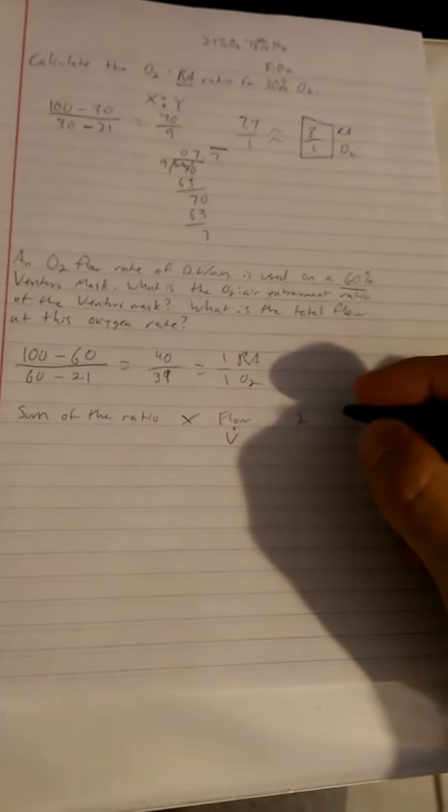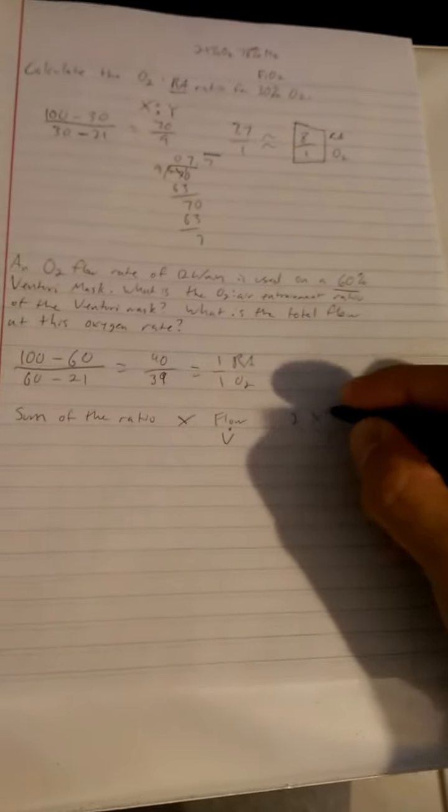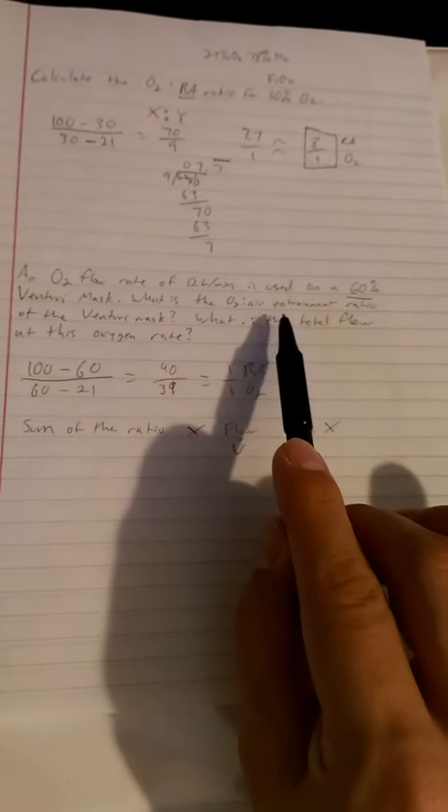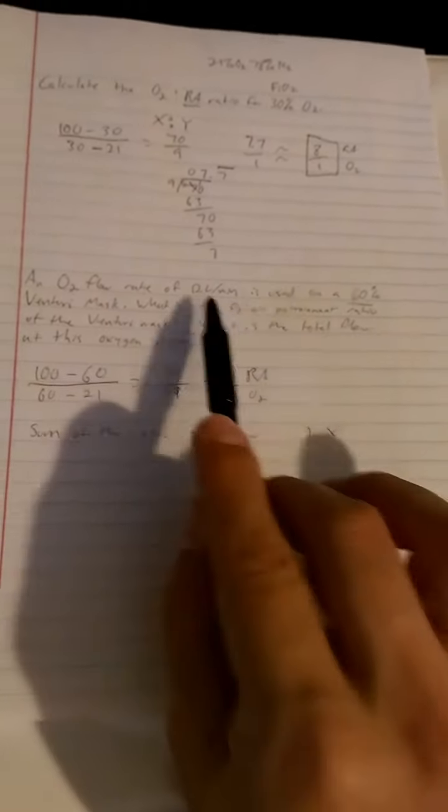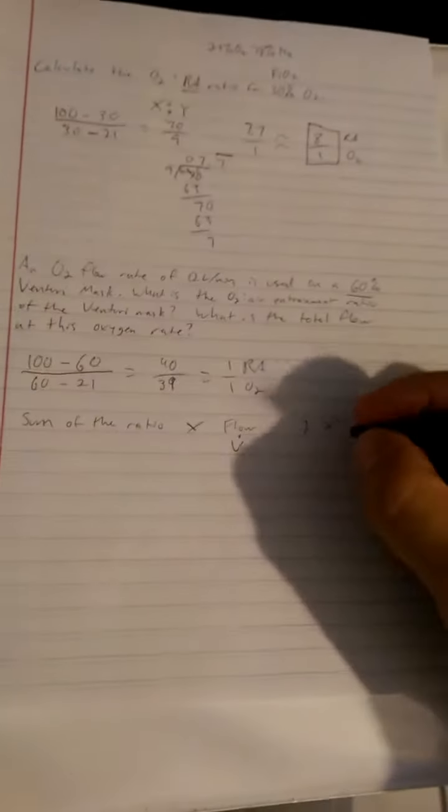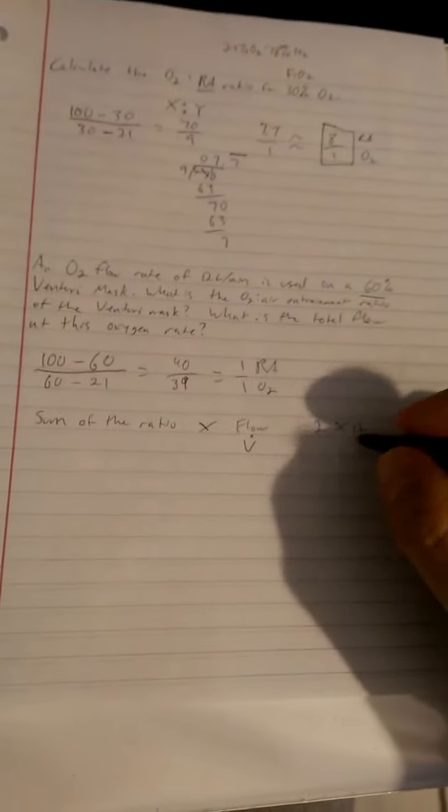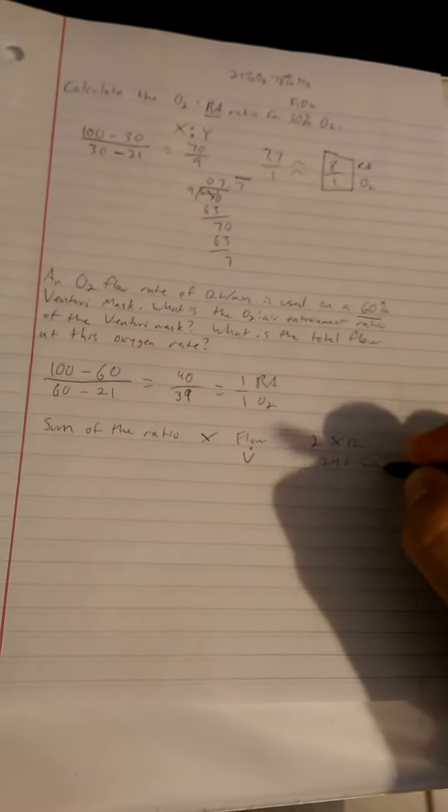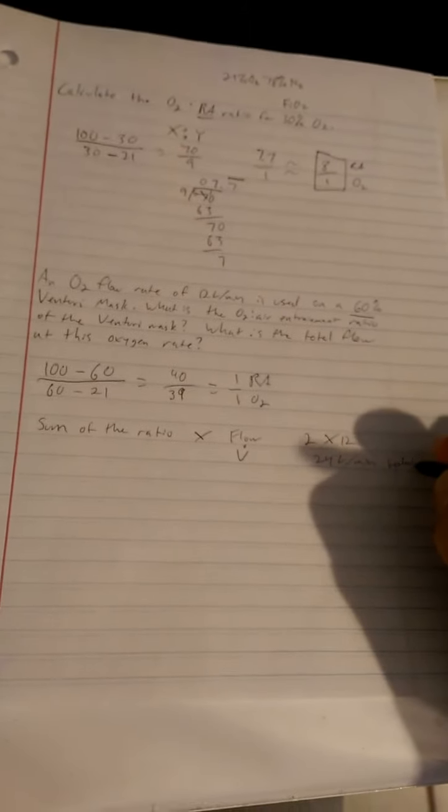1 plus 1 is 2, times in this case the total flow of the oxygen rate. Well, 12 liters per minute, right? You got 12. 2 times 12 is 24 liters per minute. That is the total flow.